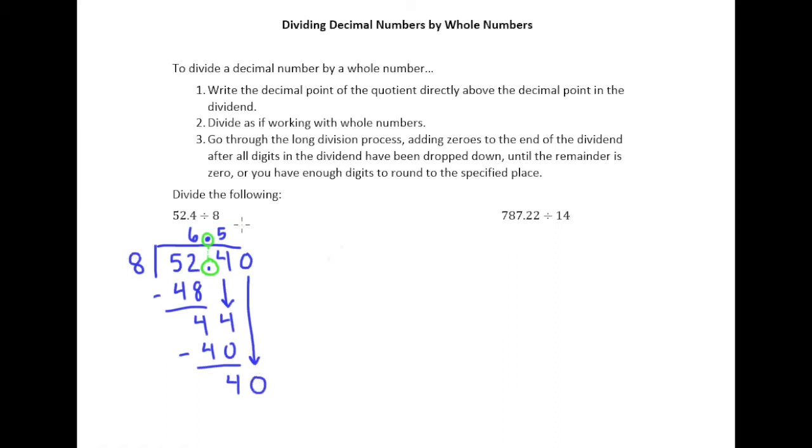Eight goes into 40 five times. Five times eight is 40. Now there's our remainder of zero. And so now I have permission to stop. So when I take 52.4 divided by eight, I get a quotient of 6.55.